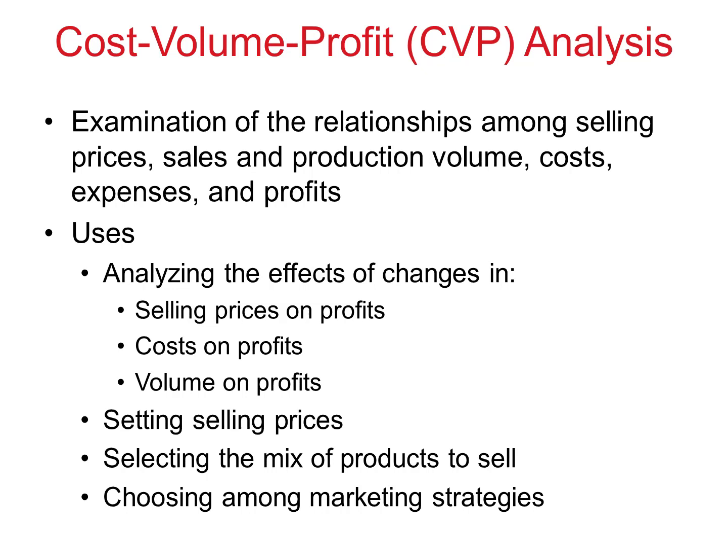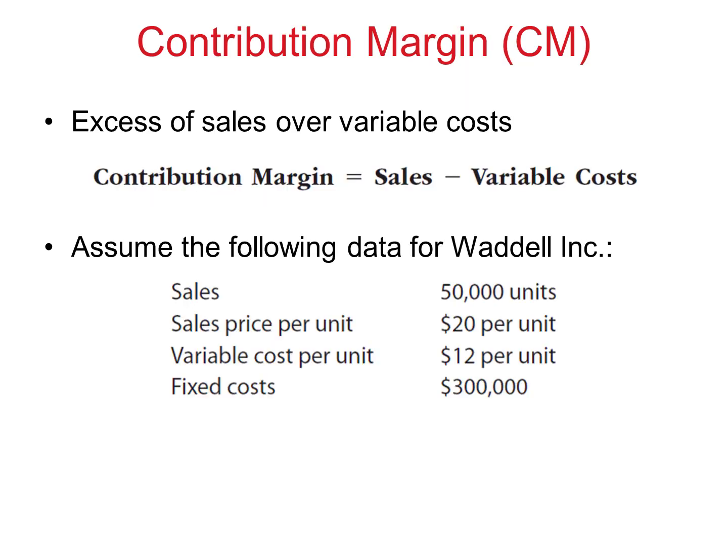In our discussion, we're going to focus on specific variable and fixed costs and use this information to make specific decisions. Some of these decisions are going to be related to our contribution margin, whether it be as a percentage or contribution margin per unit. We're going to use this information to identify the break-even point as well as targeted sales. The contribution margin equals sales minus variable cost, and we can look at this in its totality or on a per unit basis.